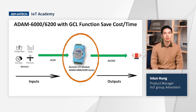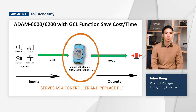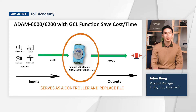However, ADAM 6000 and 6200 I/O modules can serve as a controller to perform logic control and replace PLC programming, saving the cost of buying PLCs and the time spent in programming. Through the GCL function, the whole setting process will be sped up and simplified. To better understand how ADAM GCL function can be applied, let's look at these two cases.